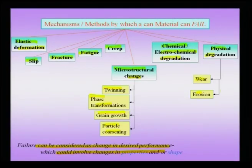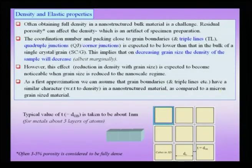Having got a broad overview of the mechanisms by which a material can fail, we will take up some of these during the course of these lectures where we will see how some of these properties have a beneficial effect when we go to the nano scale. We can actually improve the properties when working in nano structured materials. The first property we take up is a physical property which is density, but we take this up because it is closely related to some mechanical properties like the elastic properties.